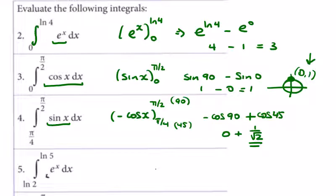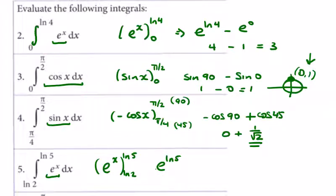Question 5 is pretty much the same as question 1. e to the x goes to e to the x when we integrate, evaluated between the natural log of 5 and the natural log of 2. So e to the ln 5 is equal to 5, minus e to the ln 2 which is equal to 2. So 5 minus 2 is 3.